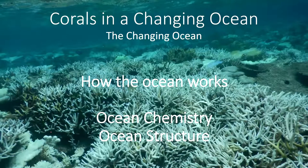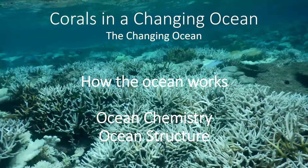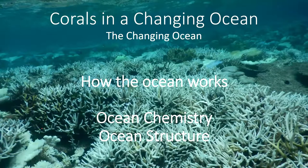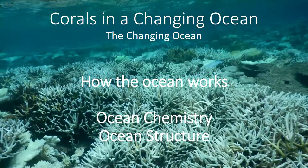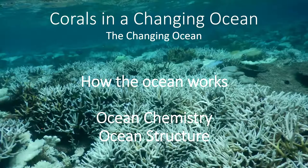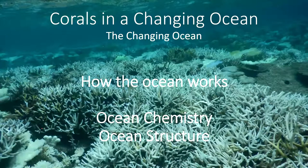In the previous video we looked at some ocean chemistry - the effects of carbon dioxide on the ocean and its ability to sequester carbon out of the atmosphere into the ocean and its effect on acidification. Now we're going to look at the structure of the ocean and some of the processes that transport chemicals across different layers within the ocean, and introduce the concept that the ocean has layers.